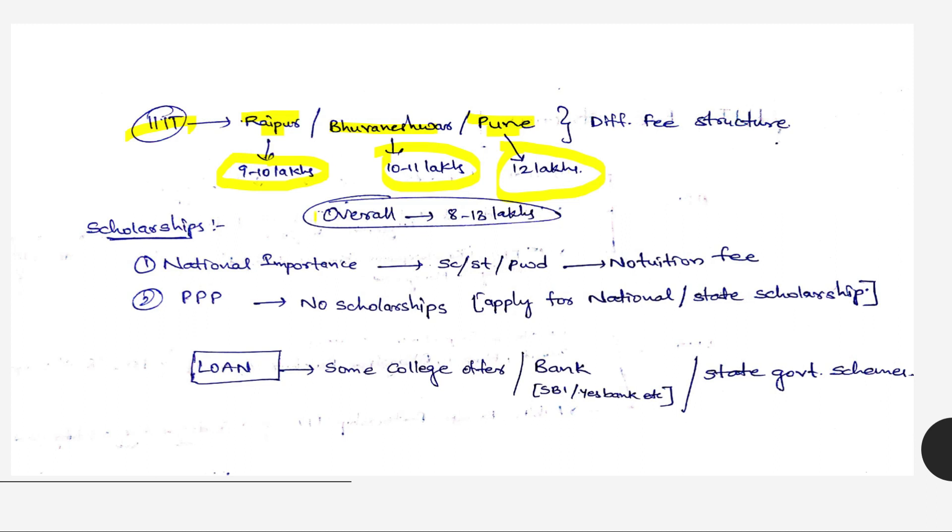Overall normally 8 to 13 lakhs will be the fee structure in IIITs. Coming to scholarships - for national importance IIITs, SC, ST, and PWD have no tuition fee. For public and private partnership, no scholarships - only apply for national and state scholarships like NSP. In some states the state government will provide some scholarships you can apply for.